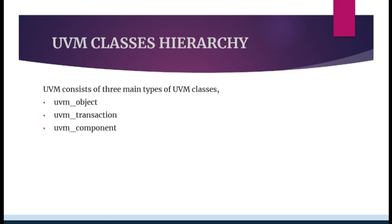Coming to today's session, as we already discussed, the UVM class hierarchy is categorized into three types: UVM object, UVM transaction, and UVM component. All predefined and user-defined classes used in UVM are categorized into UVM components and UVM objects. These two — UVM object and UVM component — are the basic building blocks upon which we develop our entire UVM code.